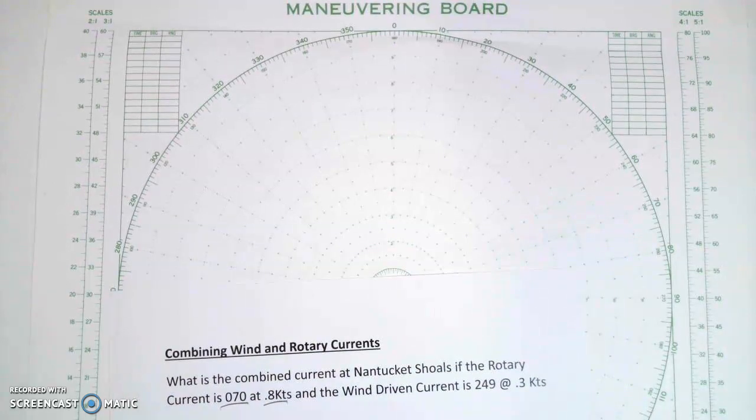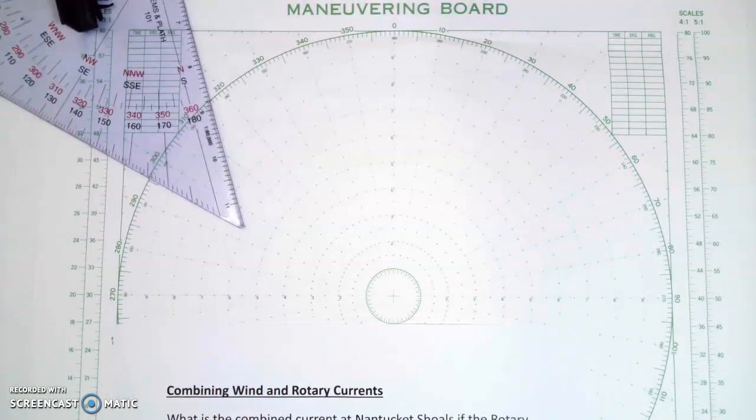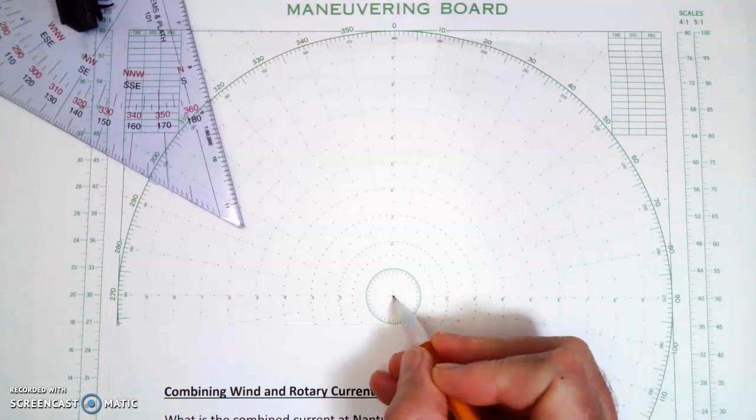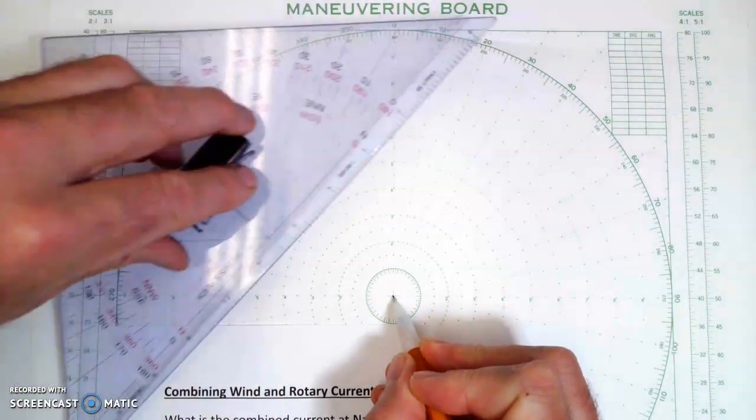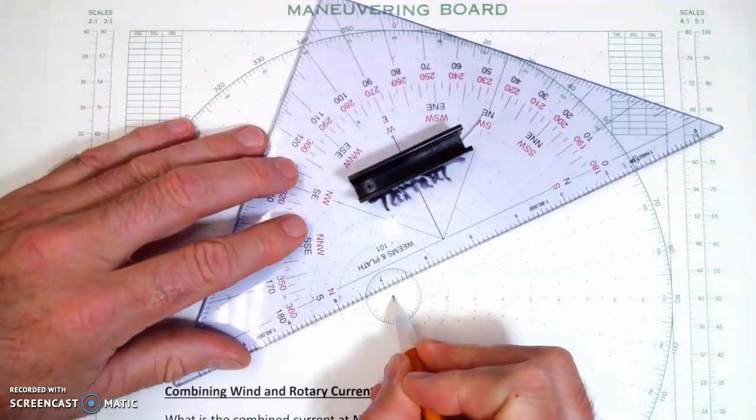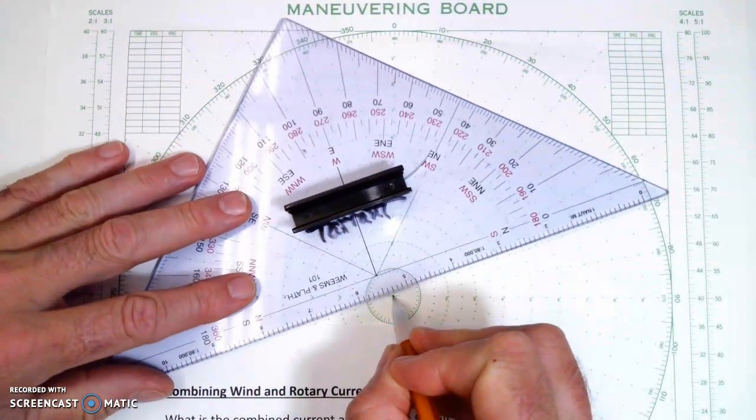So what I'm going to do is I'm going to plot that first current. I'm going to plot from the center. So I'm going to put my pencil down right there in the very center. I'm going to take my triangle. There it is, 070.